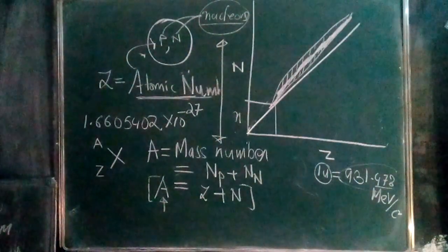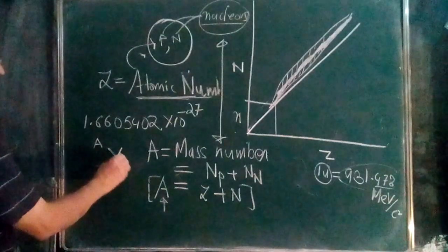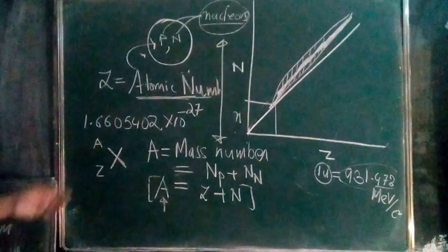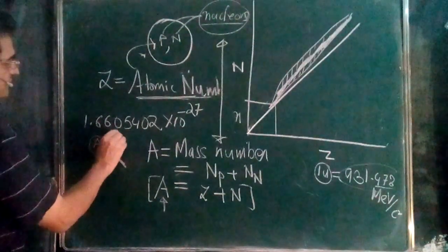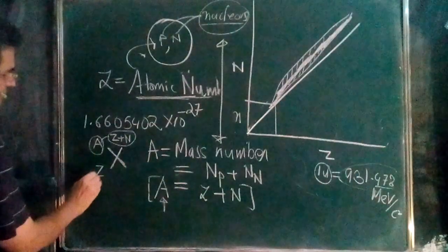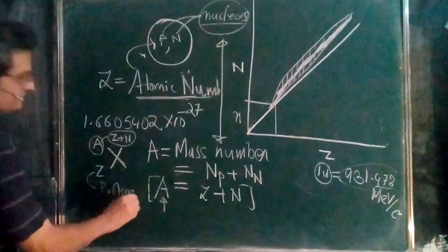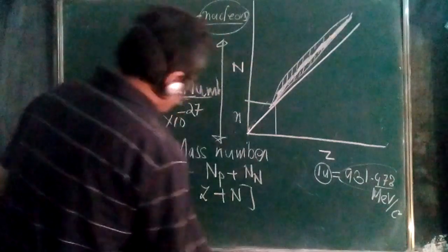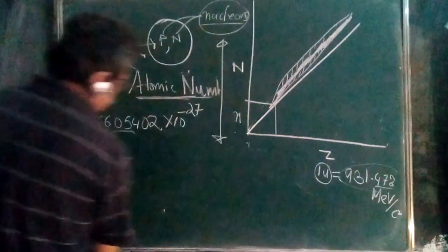You will find two numbers - this can be for any element: uranium, plutonium, boron, lithium, anything. A equals Z plus N, the number of protons and neutrons. This is just the basic thing. Now in nuclear physics we will be using certain conventions.